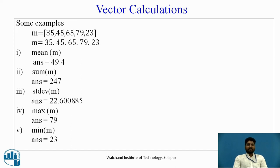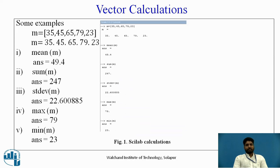All these operations or vector calculations I have shown on a Scilab window. The console window shows m as a vector, then m is defined, I have calculated mean, sum, standard deviation, maximum value among all 5, minimum value. It is very simple, you can do vector calculations in Scilab by a simple manner.